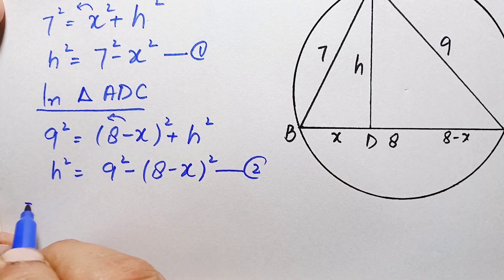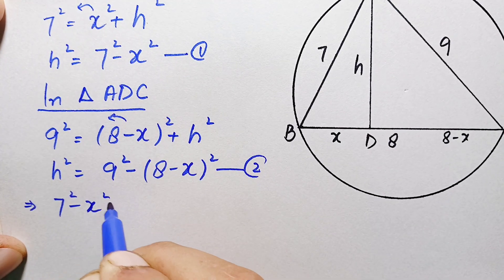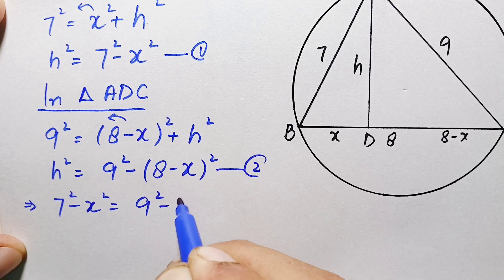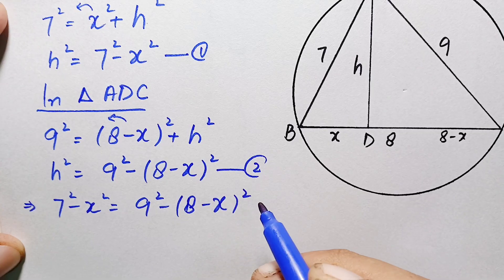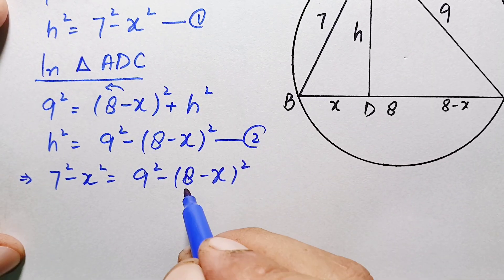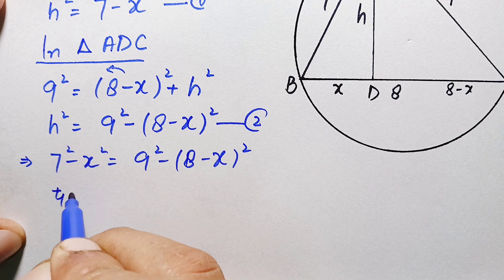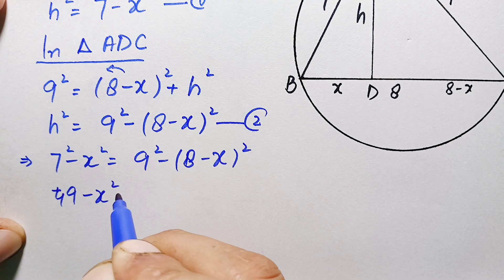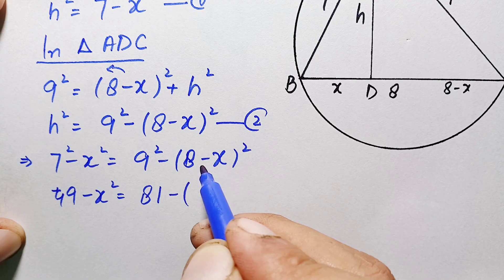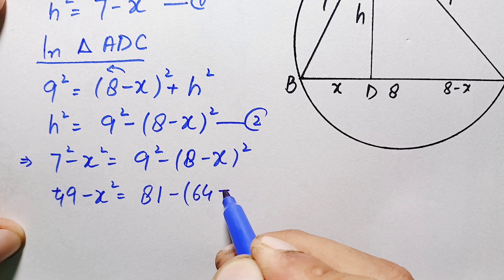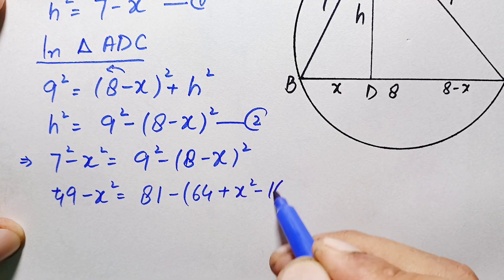Equating both expressions for h²: 49 − x² = 81 − (8 − x)². We expand the right hand side using the identity (a − b)² = a² − 2ab + b², so this becomes: 49 − x² = 81 − (64 − 16x + x²), which gives 49 − x² = 81 − 64 + 16x − x².